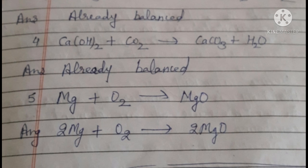Equation 5: Mg (magnesium) plus O2 (oxygen) react to form MgO (magnesium oxide). On the reactant side, oxygen atoms are 2, but in the product it is only 1. To balance this, we write 2 before Mg and before MgO. The equation is now balanced.